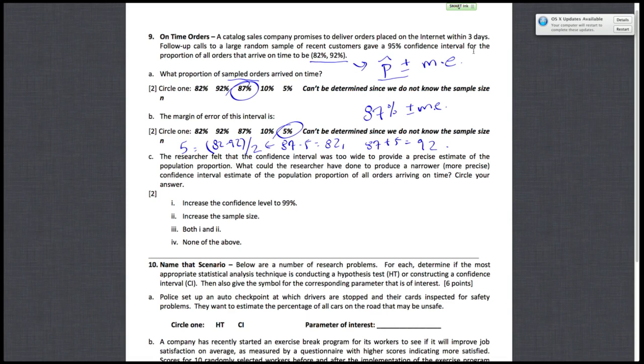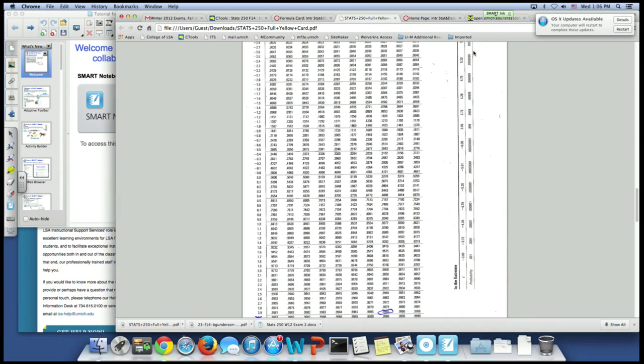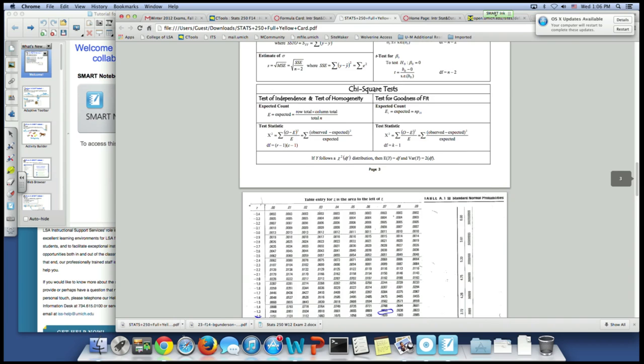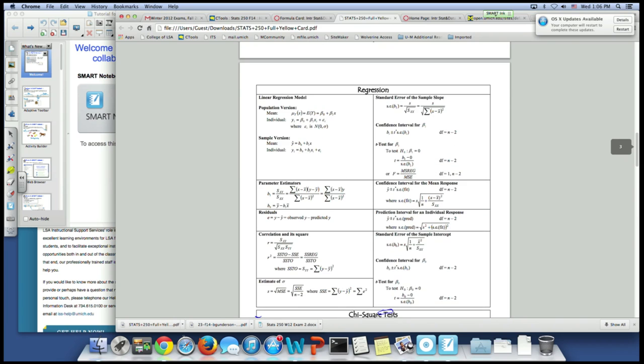Alright, so next, so for c, the researcher felt that the confidence interval was too wide to provide a precise estimate. What could the researcher do to produce a narrower confidence interval? So, if you go to your formulas for confidence intervals,